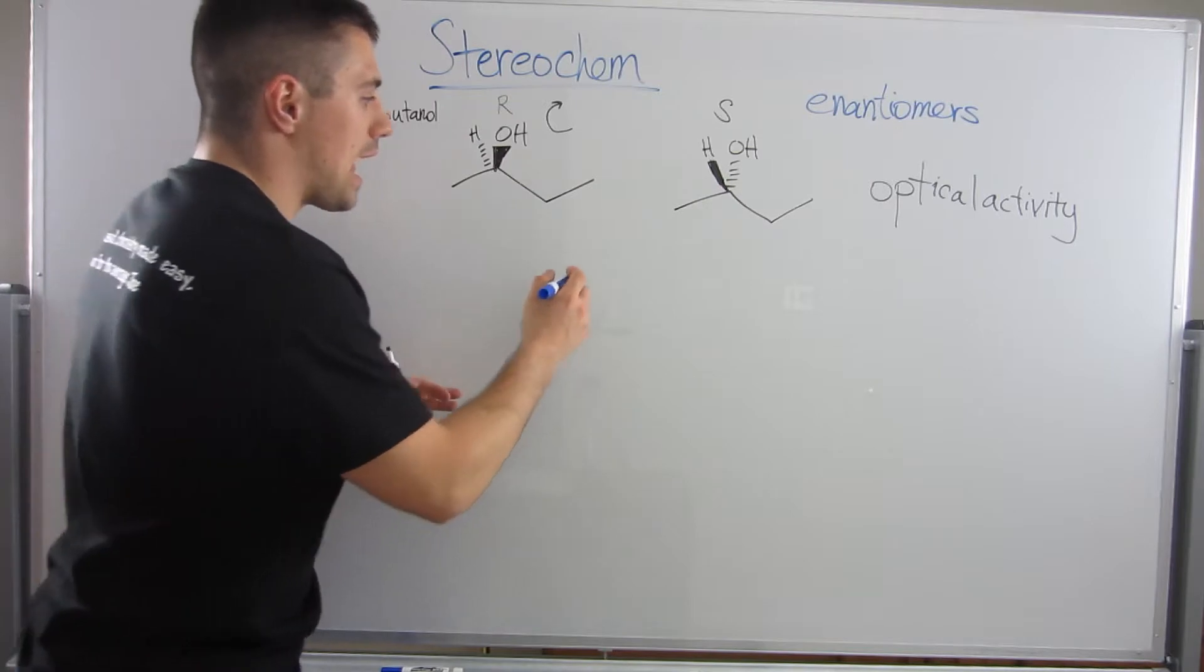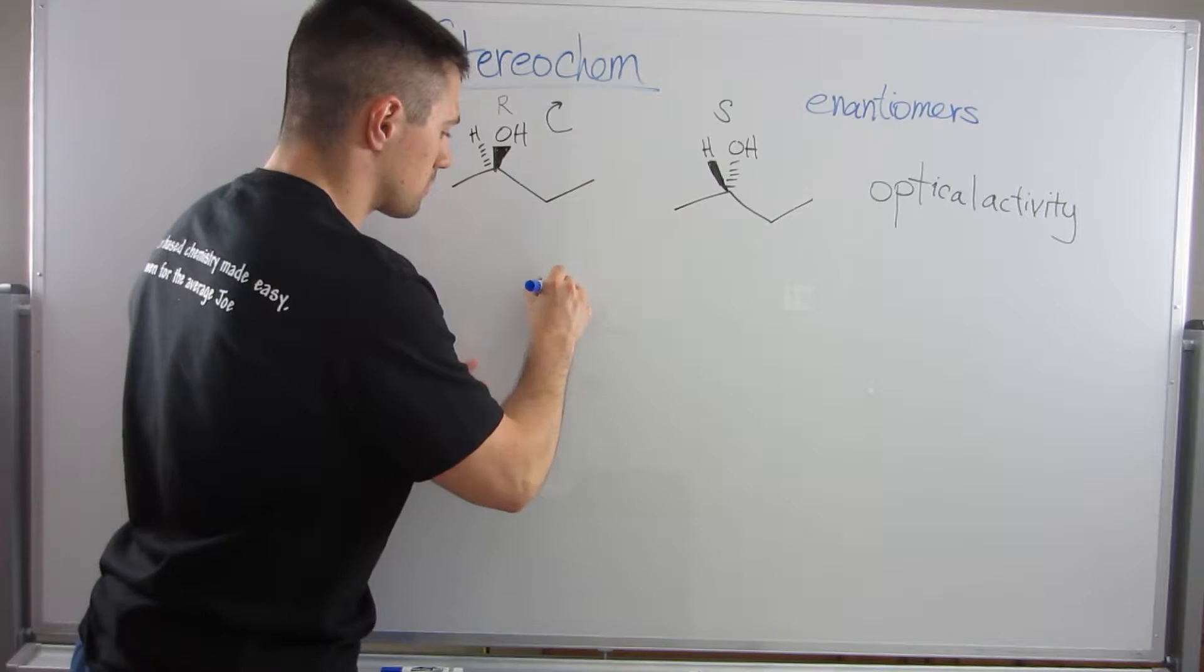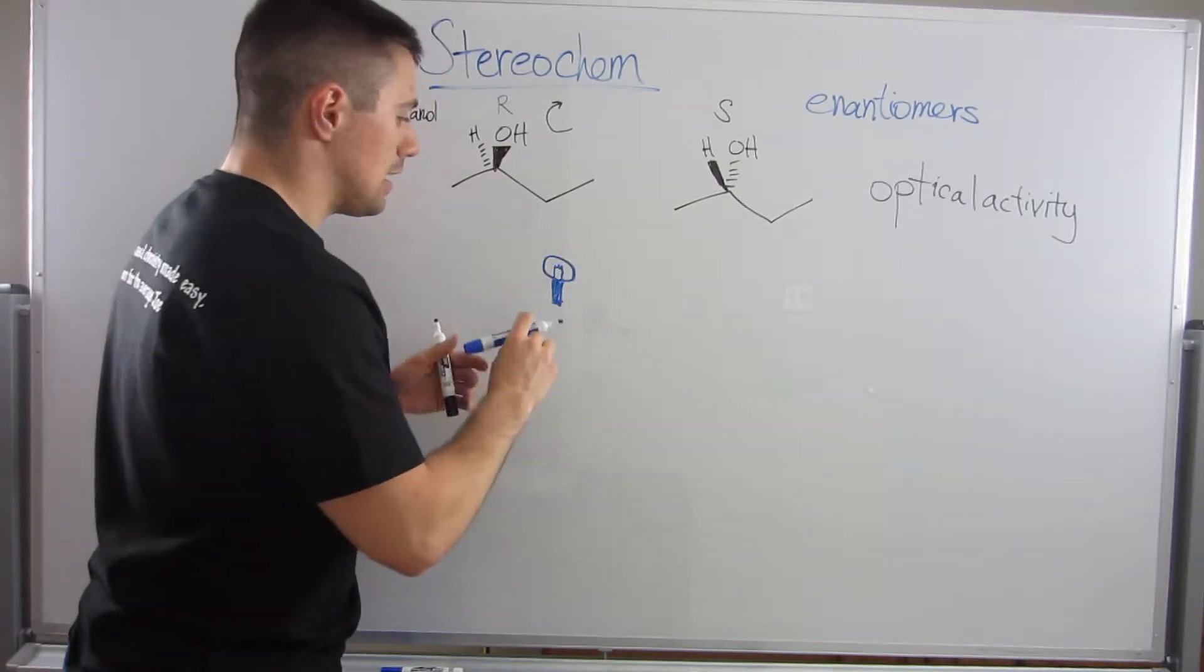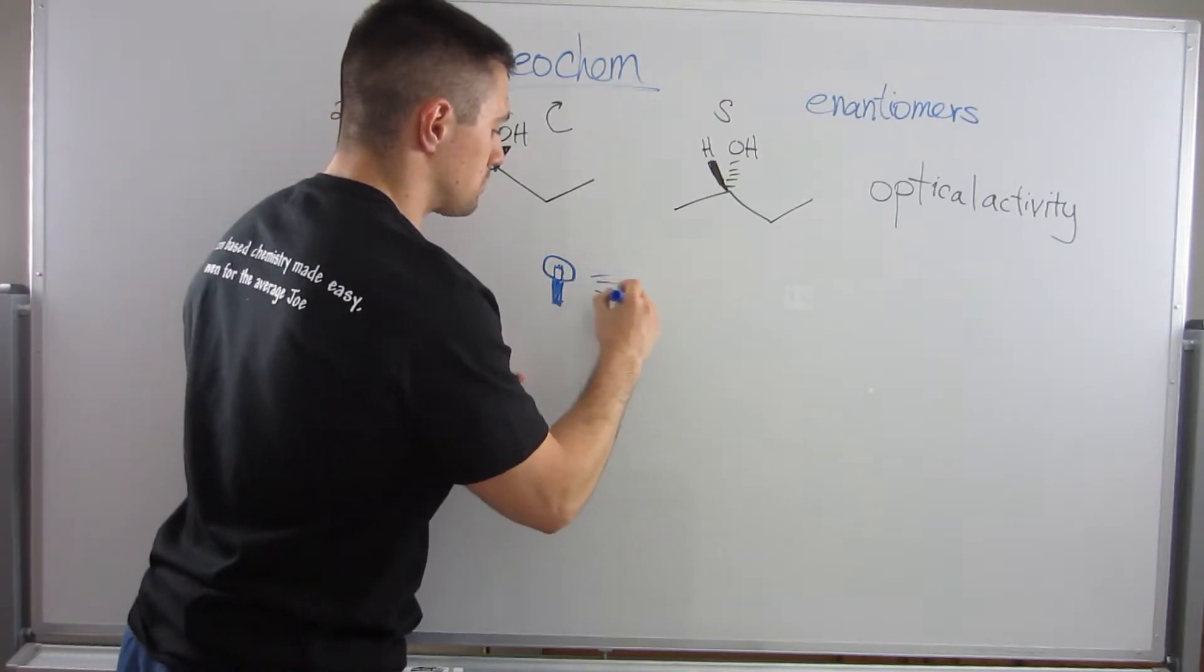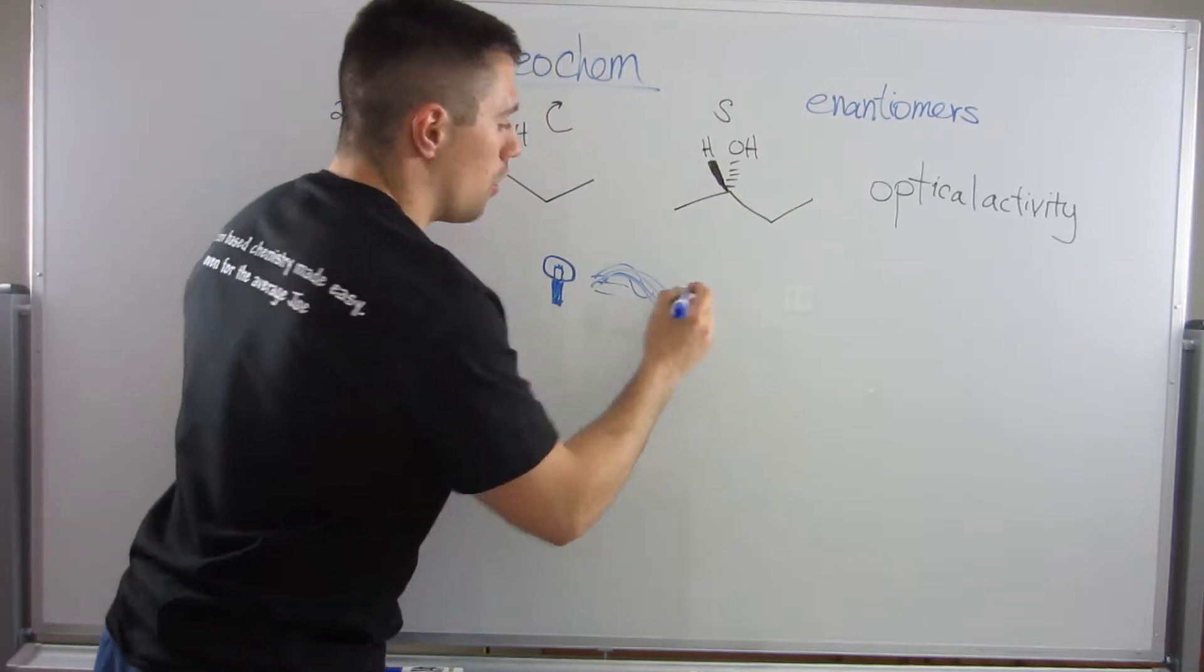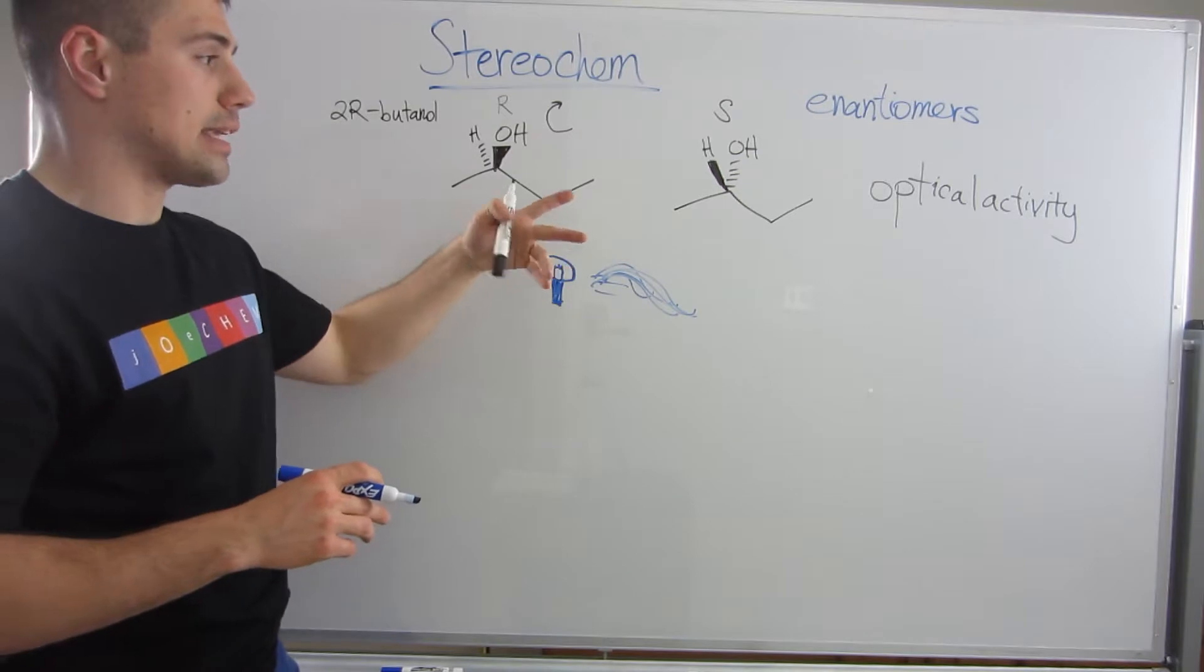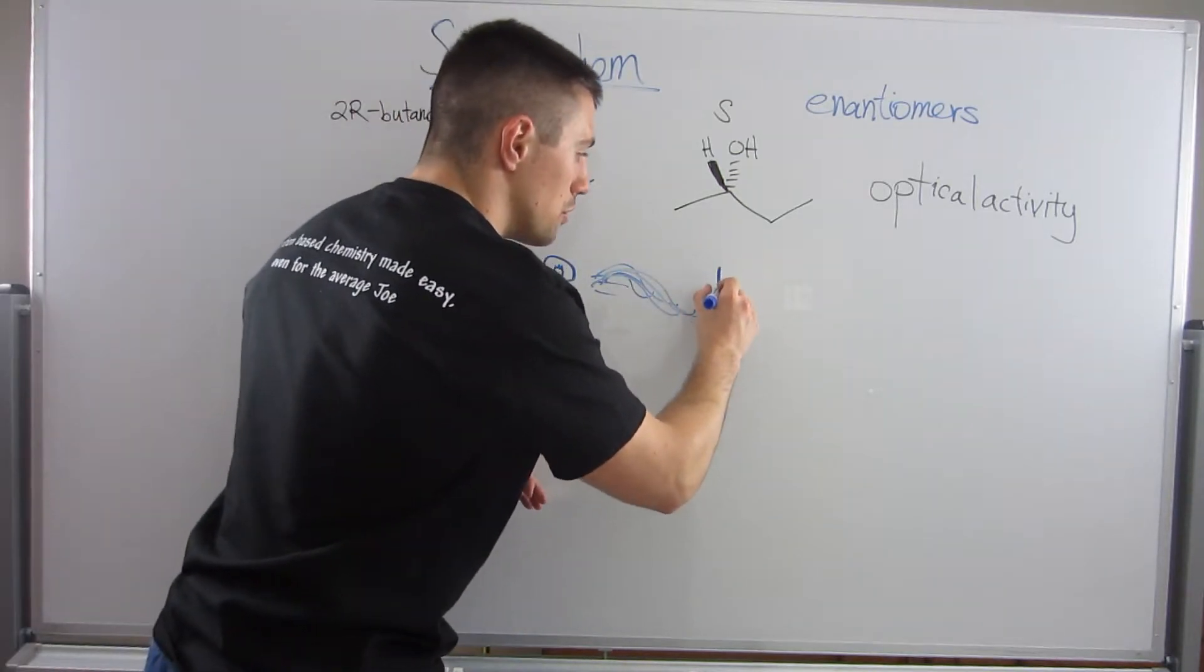If we were to have, and this is going to be a poorly drawn light bulb, but if we were to have a light bulb shining off light, and let's say there's some going this way, and light travels in waves, correct?